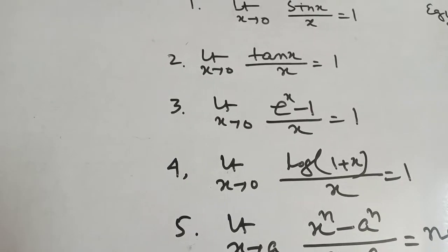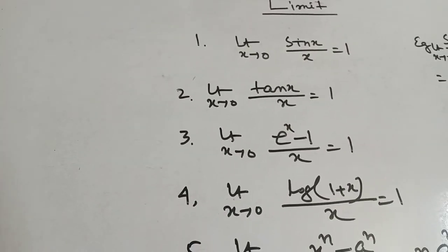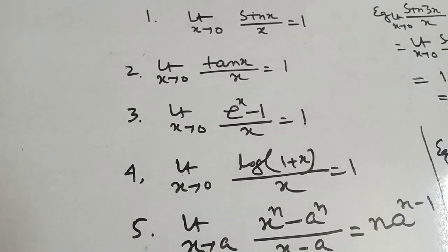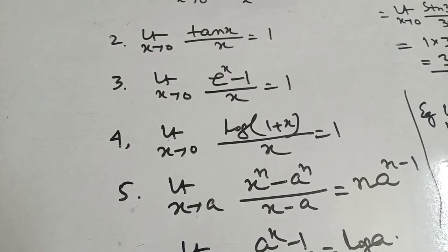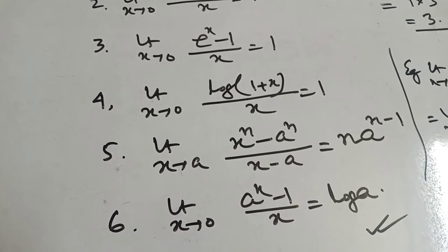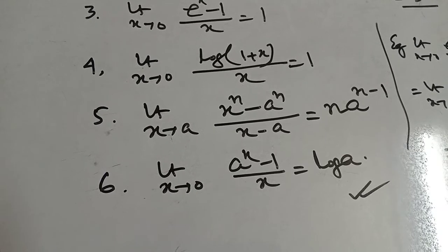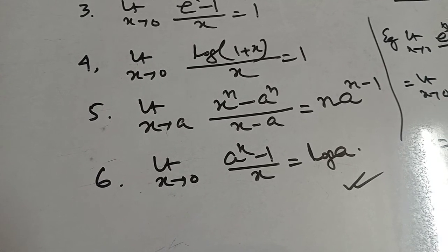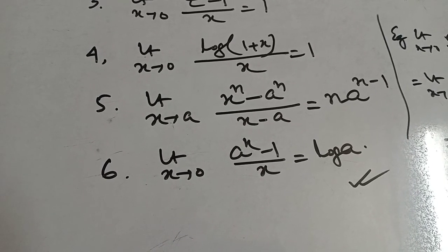There are 6 formulas for limit. 1) Limit x tends to 0 sin x by x equal to 1. 2) Limit x tends to 0 tan x by x equal to 1. 3) Limit x tends to 0 e to the power x minus 1 by x equal to 1. 4) Limit x tends to 0 log 1 plus x by x equal to 1. 5) Limit x tends to a, x to the power n minus a to the power n by x minus a equal to n into a to the power n minus 1. 6) Limit x tends to 0 a to the power x minus 1 by x equal to log a. Okay, thank you.